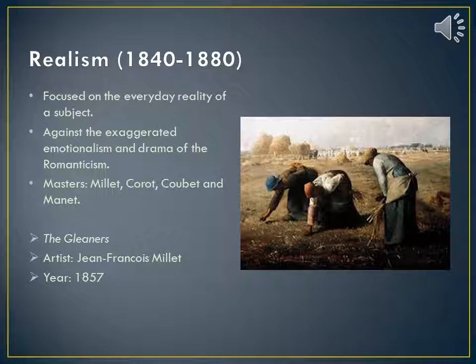This painting represents an allegory about how the new steam power of the Industrial Revolution quickly replaced history and tradition. The fourth and last artistic period is Realism from 1840 to 1880. Realism was a French style of painting that focused on the everyday reality of a subject. Realism revolted against the exotic subject matter and exaggerated emotionalism and drama of the Romantic movement. It instead sought to portray real and typical contemporary people and situations with truth and accuracy, not avoiding unpleasant or sordid aspects of life. Artists such as Millet, Corot, Courbet, and Manet were the pioneers of Realism.